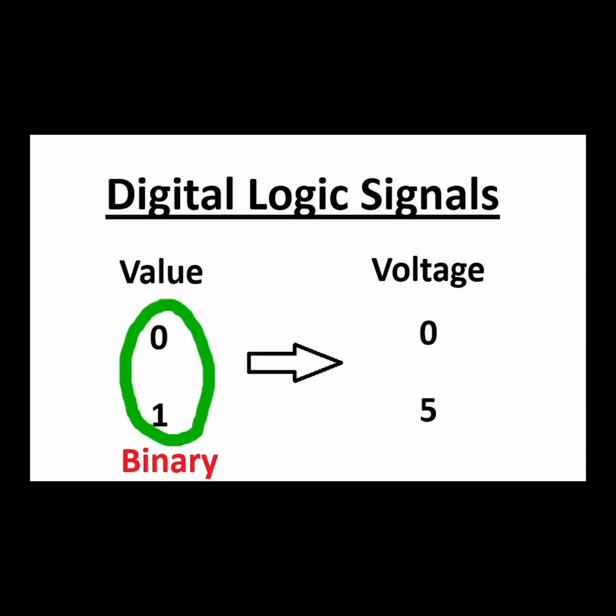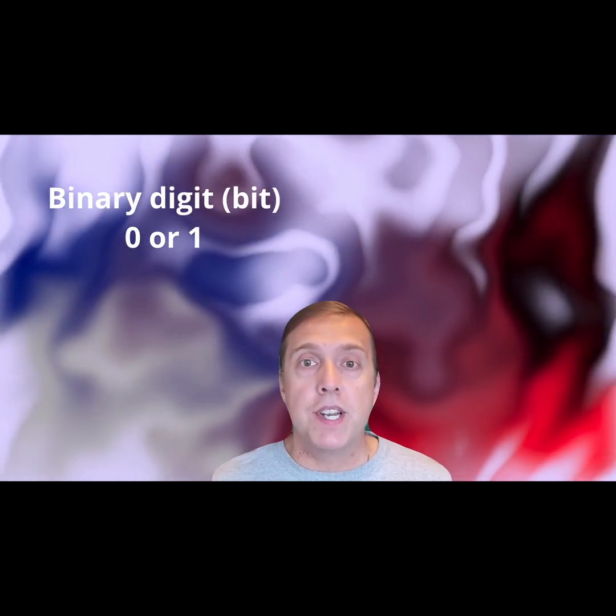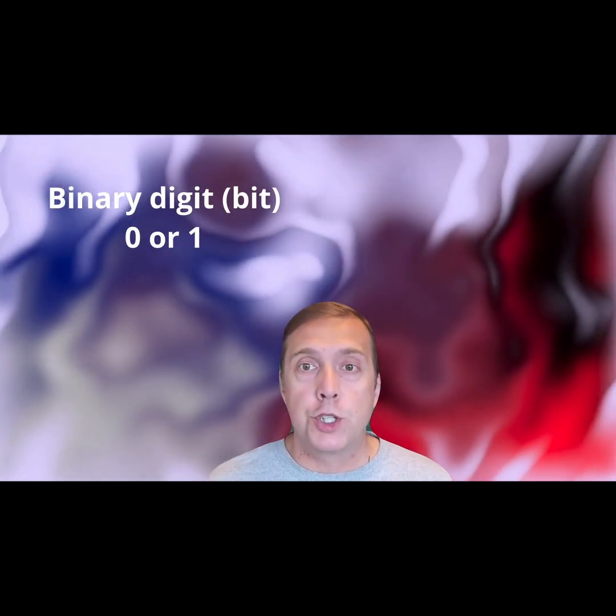Since there are only two possible values, 0 or 1, we call this a binary representation. Each digit, which can take on a value of 0 or 1, is called a binary digit, or bit for short.